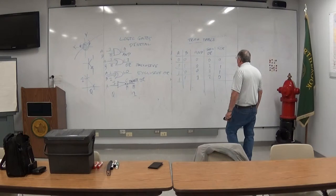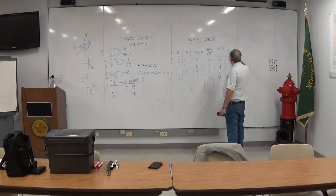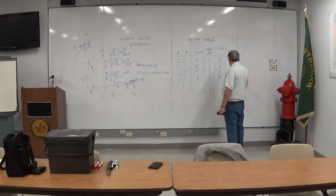The inverter's pretty easy. There's no A and B. It just goes by A. It'll be the opposite of whatever the input is. If it's one, zero. If it's zero, it's one. And if it's one, it's zero.